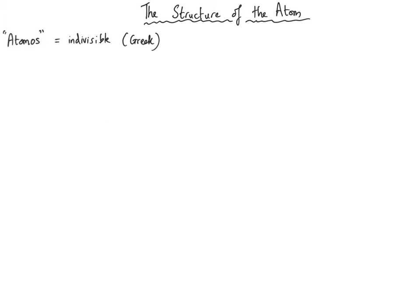First let's take a look at the structure of the atom. The word atom comes from the Greek word 'atomos', which means indivisible or uncuttable. That symbolises the fact that for thousands of years scientists thought that an atom was the smallest particle there was — you couldn't divide it any further. We now know that's not true, because atoms when you break them apart have got three particles inside them called subatomic particles: the proton, neutron and electron.